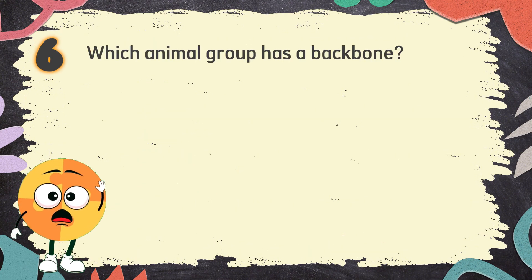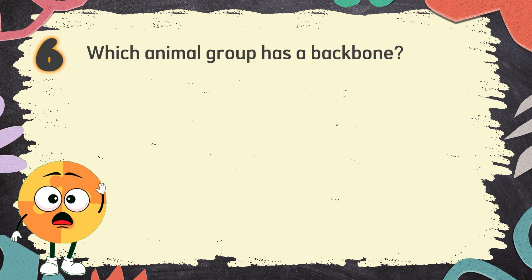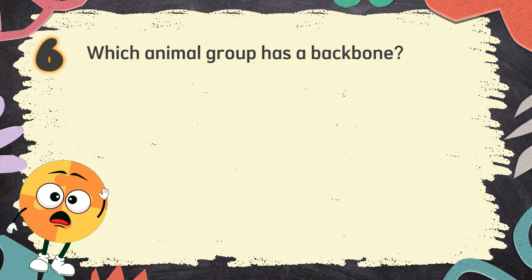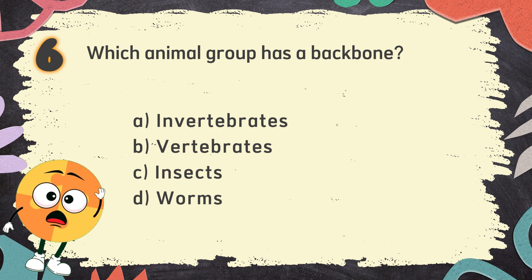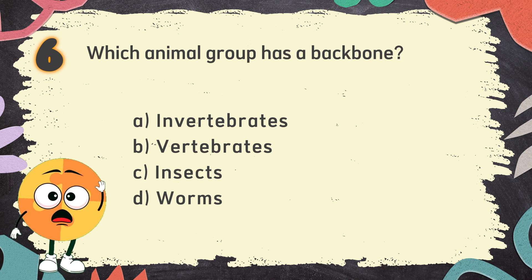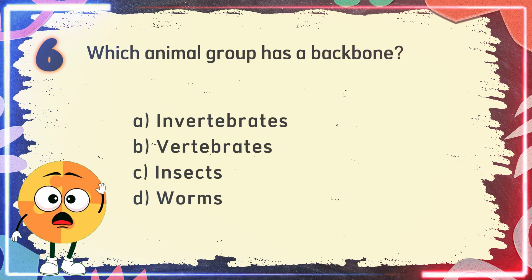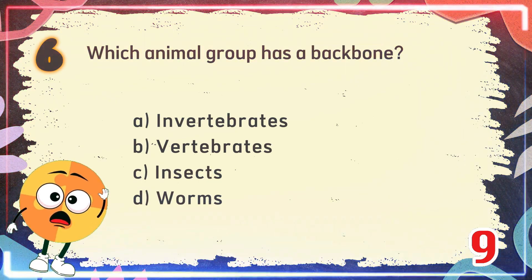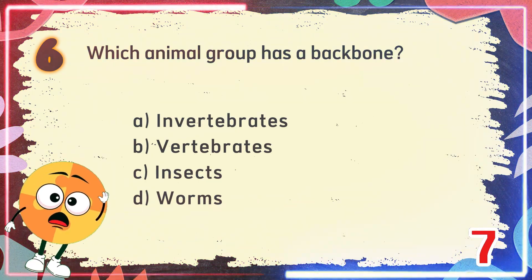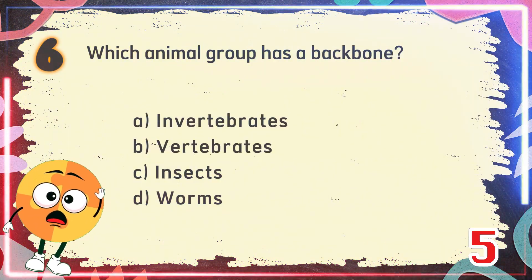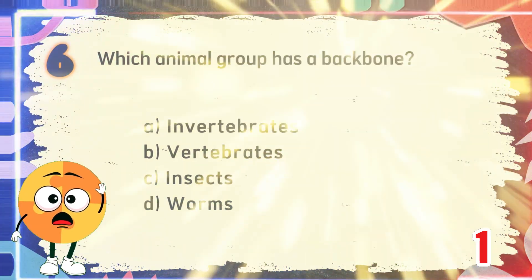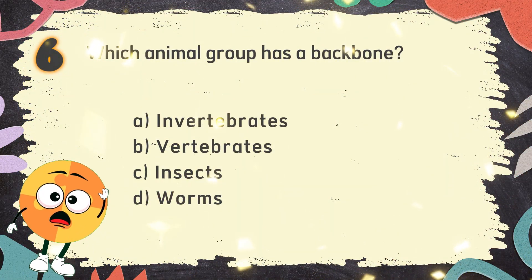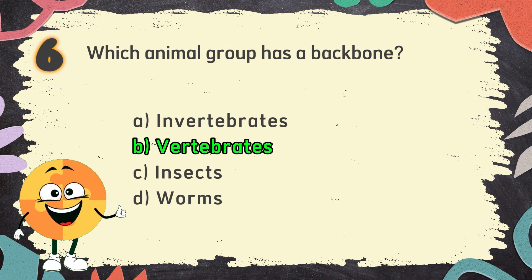Number 6. Which animal group has a backbone? The choices are A. Invertebrates, B. Vertebrates, C. Insects, D. Worms. The correct answer is B. Vertebrates.